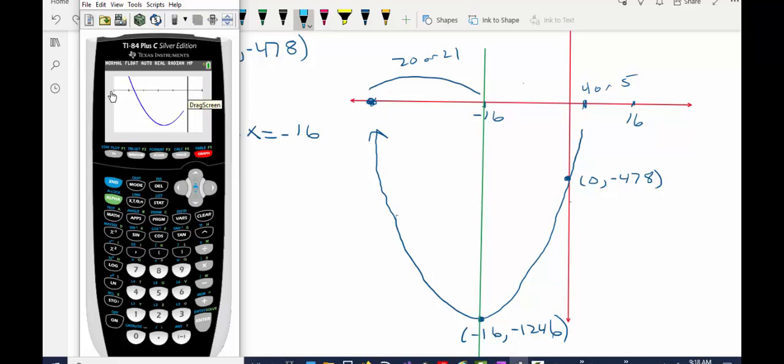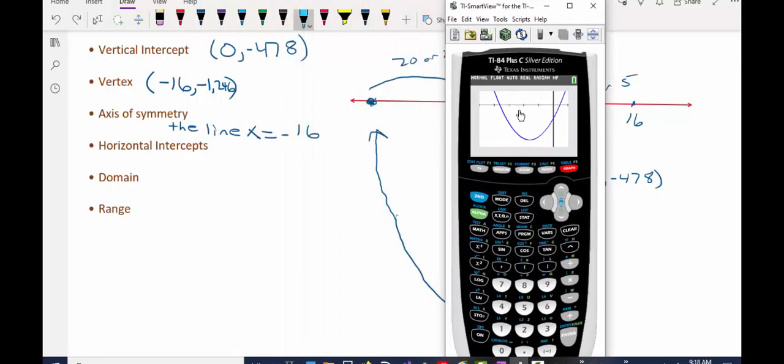Negative 10, 20, 30, 40, 50. So this is negative 50 here. So now that I have a good graph of the parabola, I can find the horizontal intercept using my calculator.